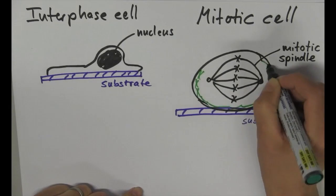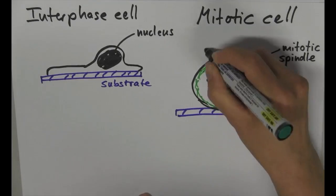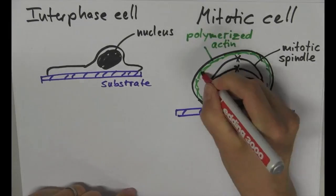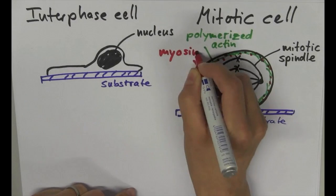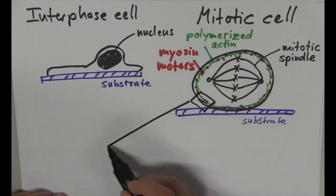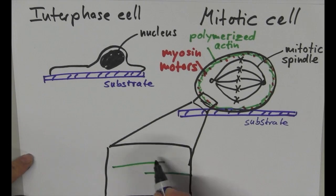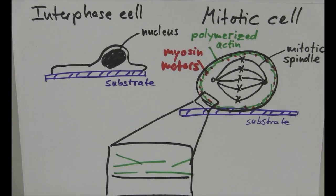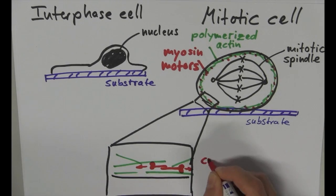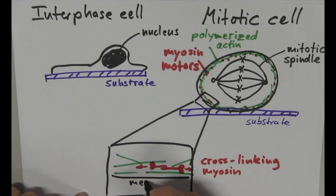At the onset of mitosis, the cytoskeletal protein actin gets enriched at the cell periphery, together with the motor protein myosin. Myosin is known to crosslink actin filaments and to generate tension in actin meshworks. Therefore we have tension in the cell cortex just like in the sheet of an inflated water balloon.